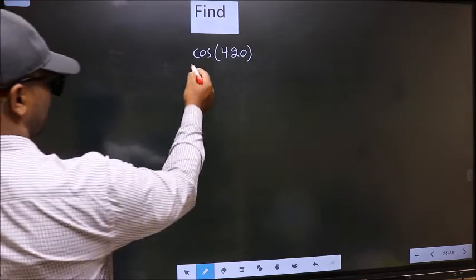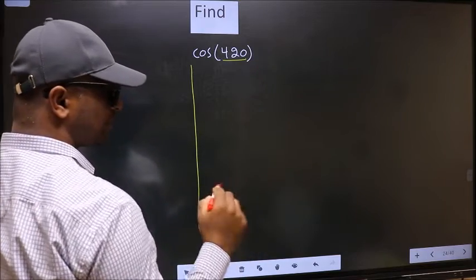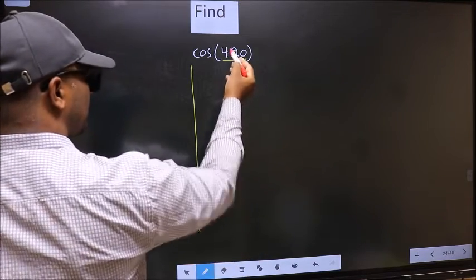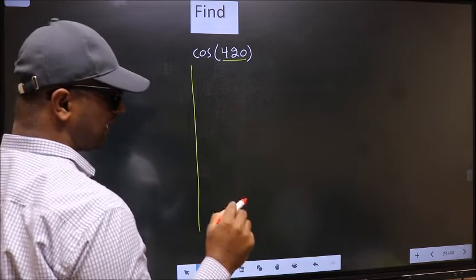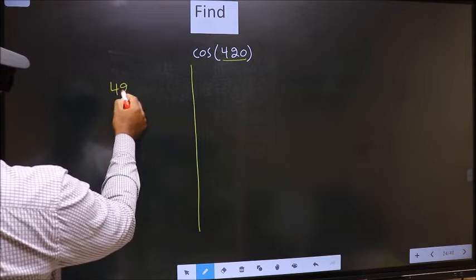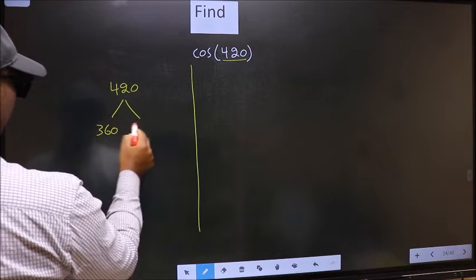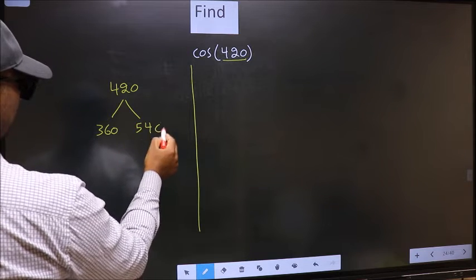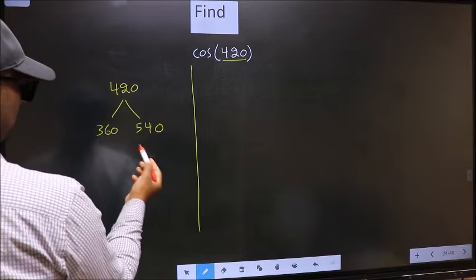See, here we have 420. Now you should check, 420 lies between which two multiples of 180. What I mean is, 420 lies between 360 and 540. This is 180 × 2 and this is 180 × 3.